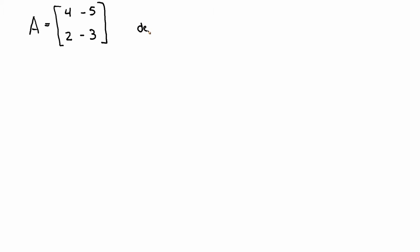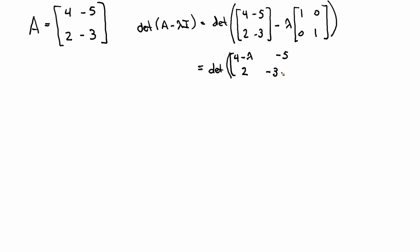And so remember that's just the determinant of A minus lambda I, right? And so if I write that out, that's the determinant of A, four minus five, two minus three, minus lambda, one zero, zero one. Or four minus, just performing the algebra, four minus lambda, minus five, two, minus three minus lambda.